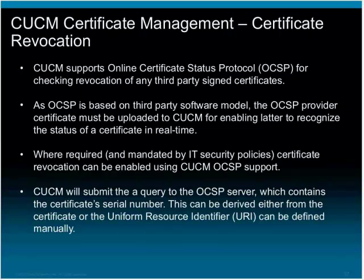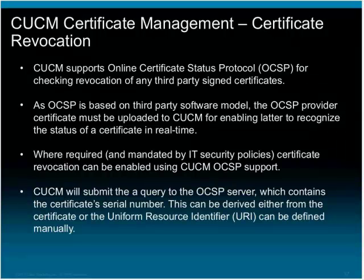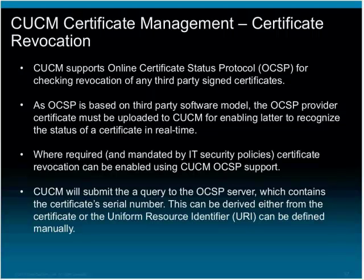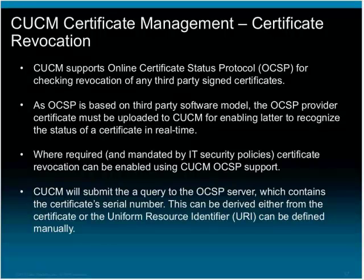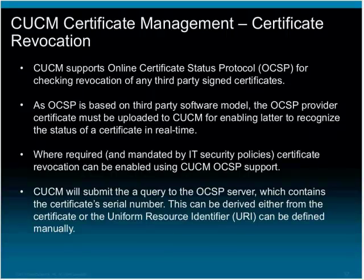The question is: how would you know if a certificate is no longer valid or was revoked because the keys were compromised? OCSP allows live certificate revocation checking on CUCM. It requires third-party software to sit between the actual CA and CUCM, proxying requests. When CUCM sends a request using the certificate serial number asking whether the certificate is valid, the OCSP proxy forwards it to the CA, which returns one of three responses: the certificate is valid, it has been revoked, or it is no longer valid.